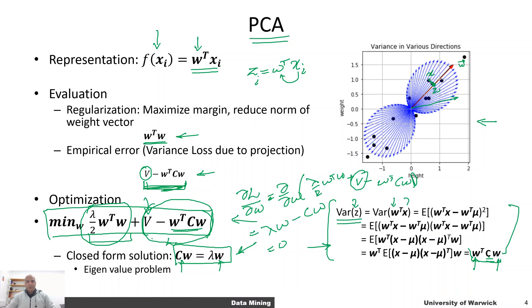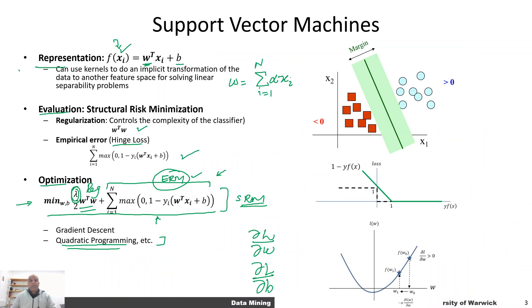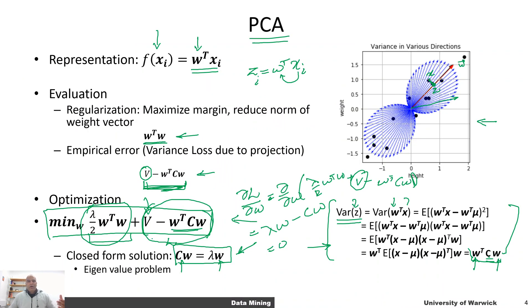I hope you are now able to relate these two concepts. Principal component analysis is the linear dimensionality reduction method that minimizes variance loss, and you've seen an alternate proof of the same thing. We started with something completely different — we discussed how Lagrange multipliers can be used to derive PCA, but it can also be derived using structural risk minimization. Similarly, support vector machines can be derived using Lagrange multipliers, but the structural risk minimization formulation is more universal. You can see that almost every machine learning model fits into this framework of representation, evaluation, and optimization.